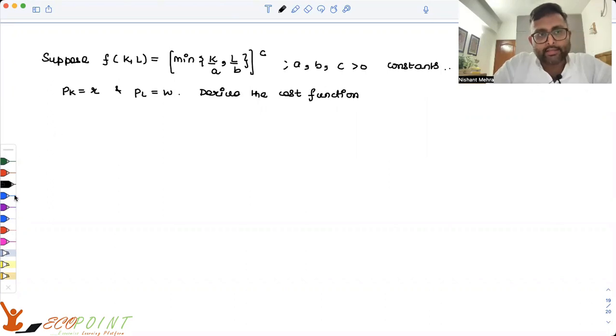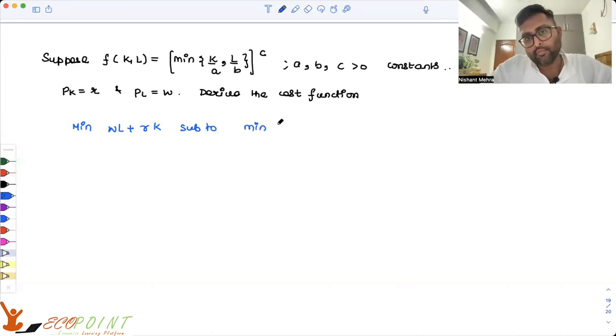So the idea is that you need to minimize wl plus rk, subject to min of k by a, l by b to the power c greater than or equal to y.